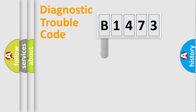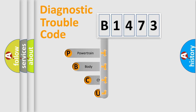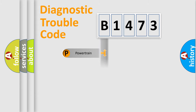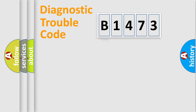Let's look at the history of diagnostic fault code composition according to the OBD2 protocol, which is unified for all automakers since 2000. We divide the electrical system of an automobile into four basic units: Powertrain, Body, Chassis, and Network.